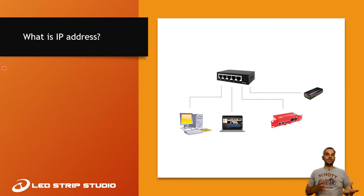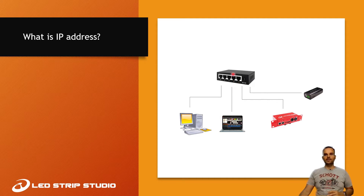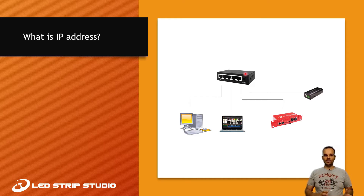First of all, we need to talk about what a network actually is. I will give you the most simple example: you have one Ethernet switch, which is a device that connects all the devices together. Via Ethernet cable you connect your computer to the Ethernet switch, then you can connect a second computer like a laptop to the Ethernet switch, and you also use Ethernet cables to connect our devices like LEC3 or Reactivo to your network. When these devices are connected to the Ethernet switch, they can communicate with each other.